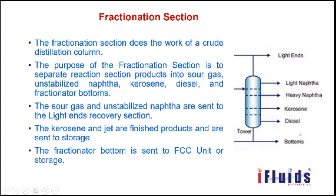In summary: crude distillation alone converts only about 45 percent of crude oil into usable products. Vacuum distillation increases this to around 60 to 70 percent, but 15 to 25 percent of the product — called VGO — cannot be used as a consumer product and is treated as waste. The hydrocracker unit cracks this low-value stock into smaller molecules, producing high-value products and maximizing overall refinery yield. This is what the hydrocracker unit accomplishes. Thank you all.